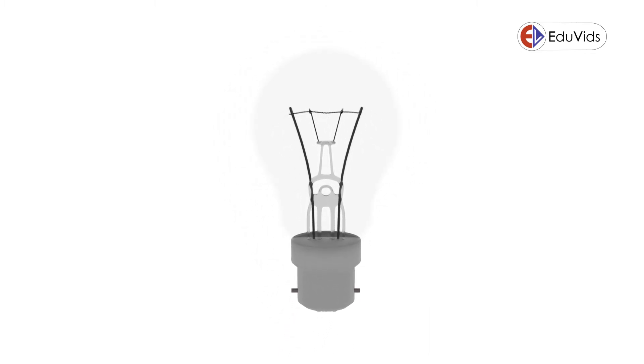A glass enclosure prevents oxygen in the air from reaching the hot filament. Without this glass covering, the filament would overheat and oxidize in a moment. This is an elegantly simple system and it works quite well at producing light.